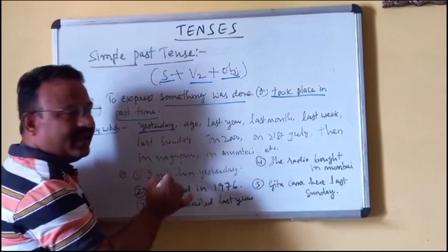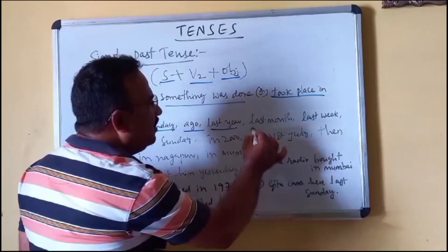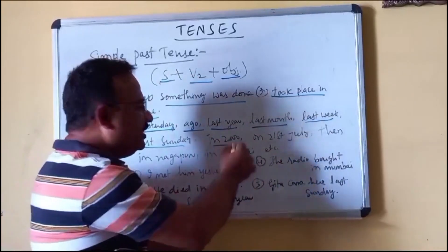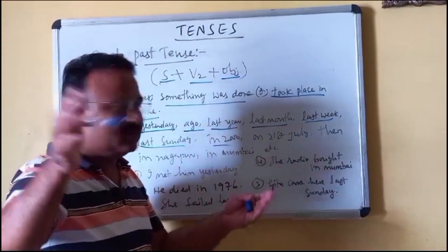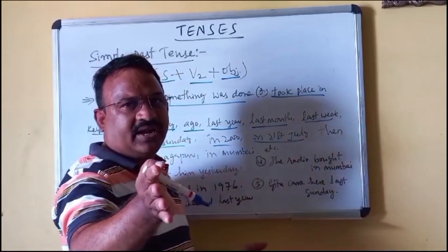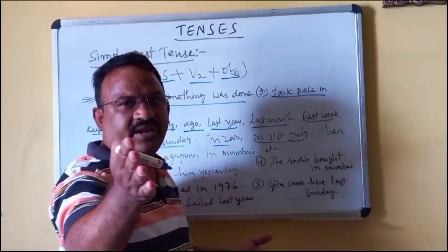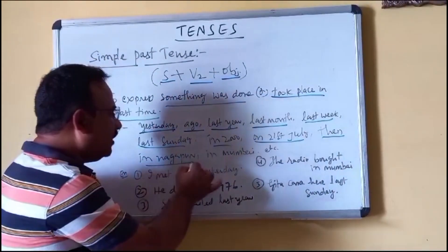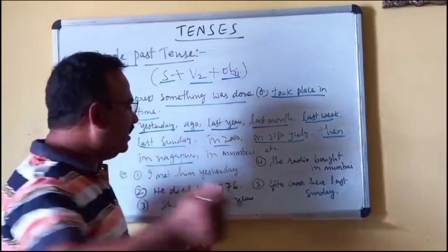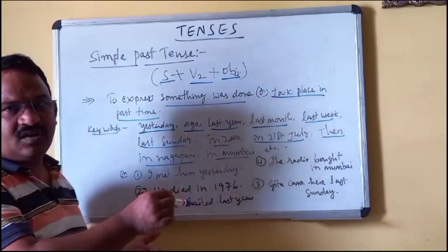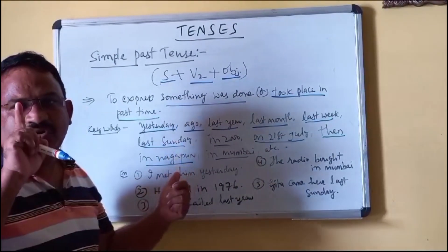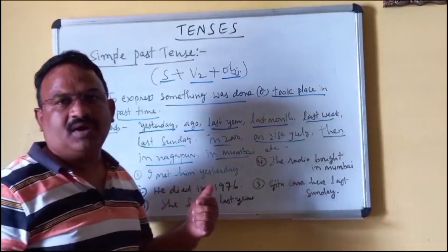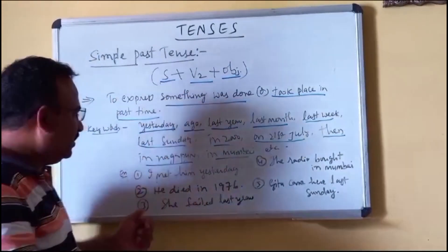The keywords are: yesterday, ago, last year, last month, last week, last Sunday, and years like in 2000, in 2005, in 2012. Also particular dates — on 21st July, on 20th August, on August 15th — and also places like in Nagpur, in Mumbai, in Kolkata. Whenever you see these keywords, use simple past tense.